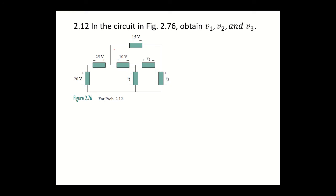In the circuit in Figure 2.76, obtain V1, V2, and V3. Let us assume that the direction is from negative to positive. This is only an assumed direction — just be consistent.